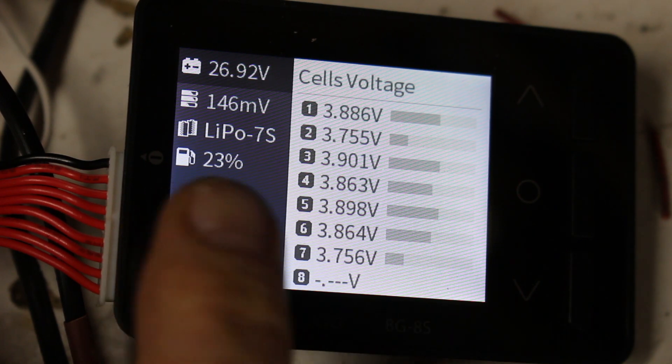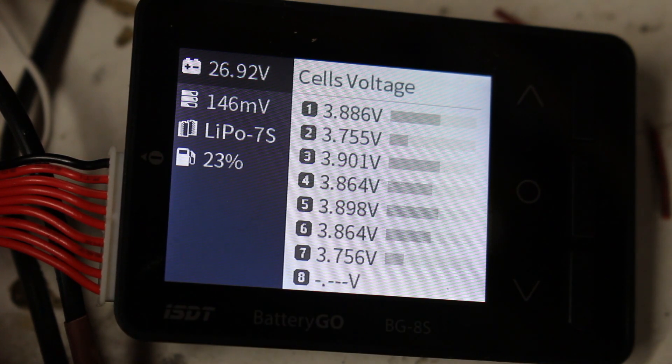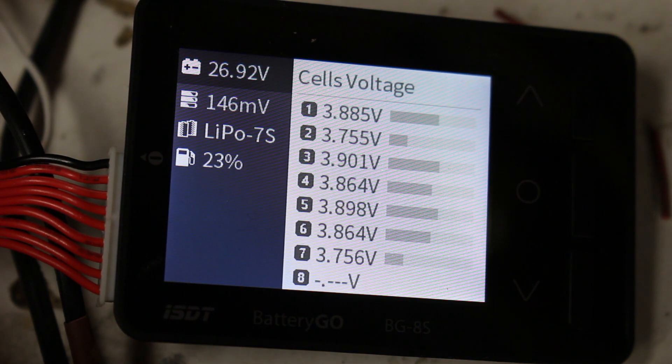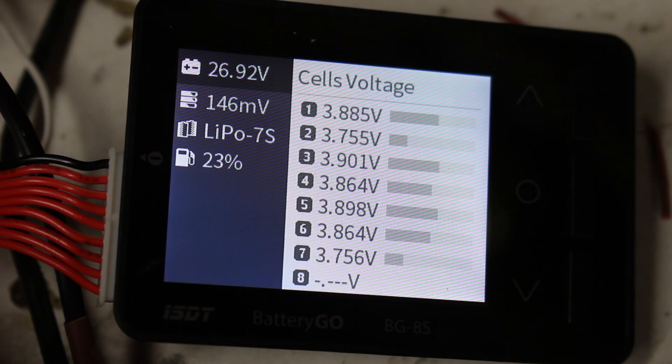It's showing 146 millivolts between the highest and lowest cell. That's quite a bit but we're going to fix that in a sec. And we're on LiPo 7S, which is perfect.